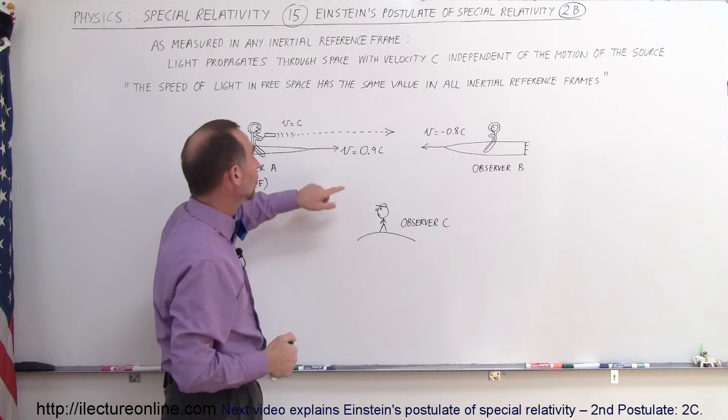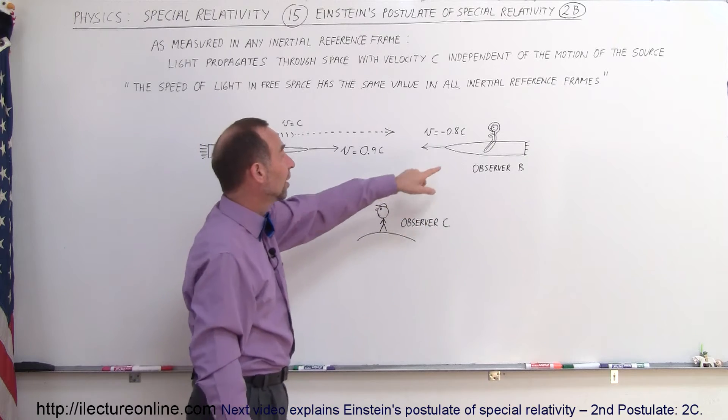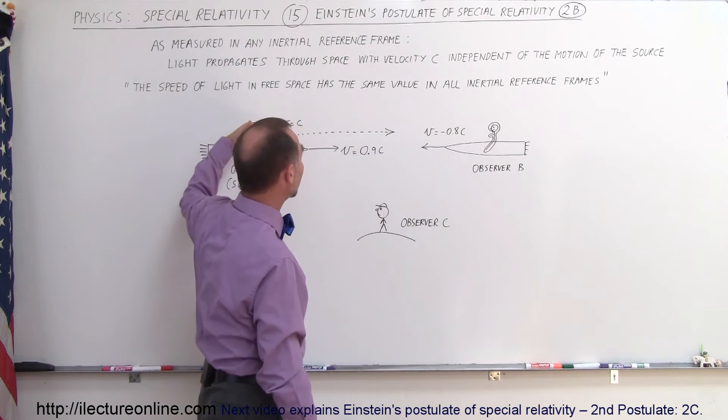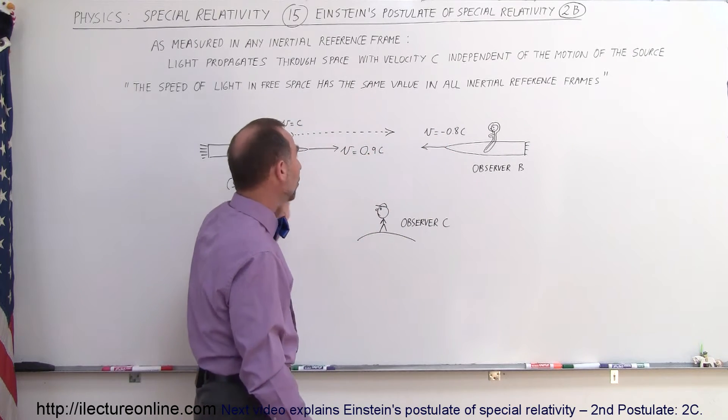Well, classical mechanics would say that we would have to add up all these velocities. And so, according to classical mechanics, this observer would see the light of speed coming towards him at 2.7 times the speed of light, 0.8 plus 0.9 plus 1.